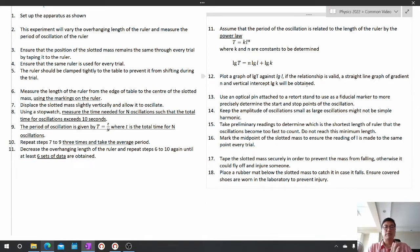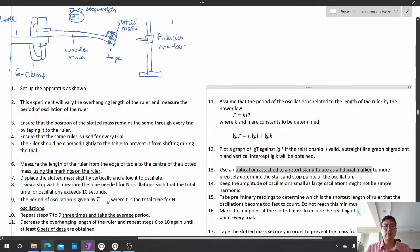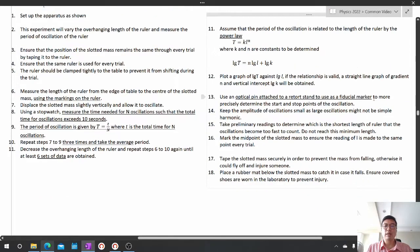What about the quality of the results? To ensure that our results are good quality, one of the things that we should do is use an optical pin attached to a retort stand to use as a fiducial marker. That's the reason why I put this fiducial marker here. We can't just write to put a fiducial marker, we have to explain in what way it helps our experiment. A fiducial marker helps us to determine the start and stop points of the oscillation more precisely.